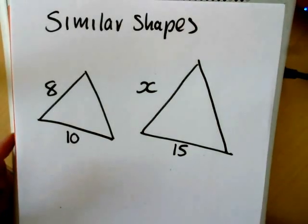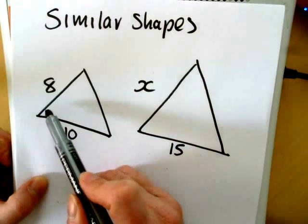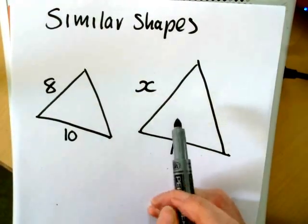So here's a typical similar shape problem. With similar shapes, they're similar in that in triangles all the angles will be the same, although this isn't an angle problem.